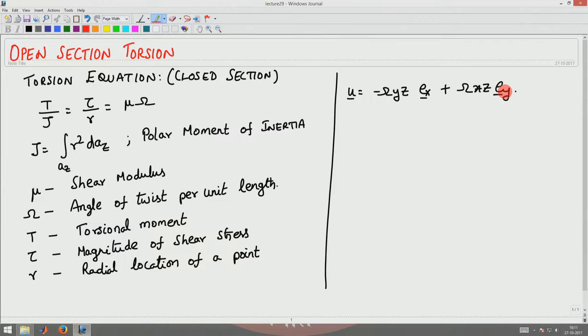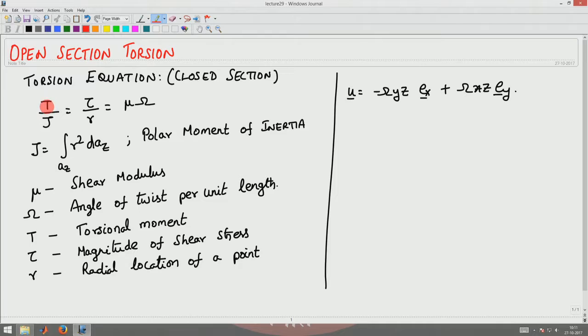We derived the torsion equation which was T by J, where T is the twisting moment or torsion moment, J is the polar moment of inertia equal to shear stress by the radial location of the point equal to shear modulus times angle of twist per unit length.